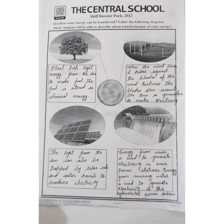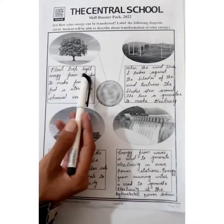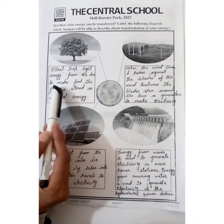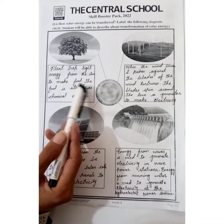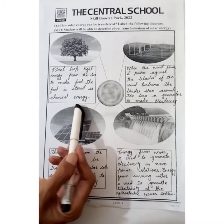This is a plant. Plants trap light energy from the sun to make food. The food is stored as chemical energy.